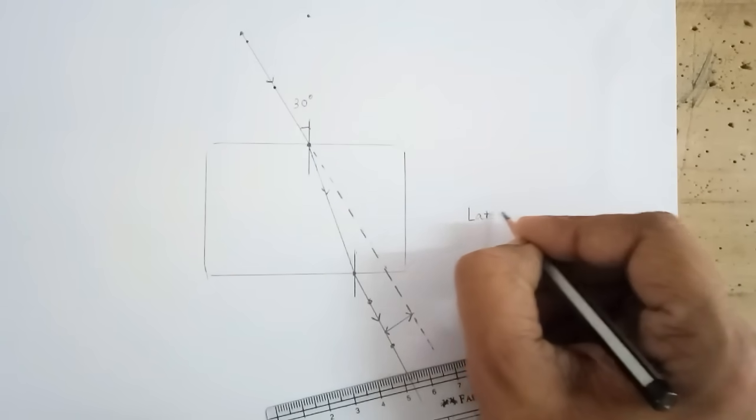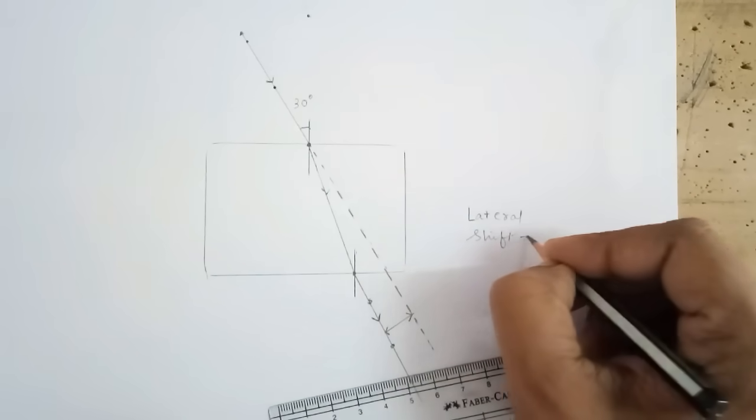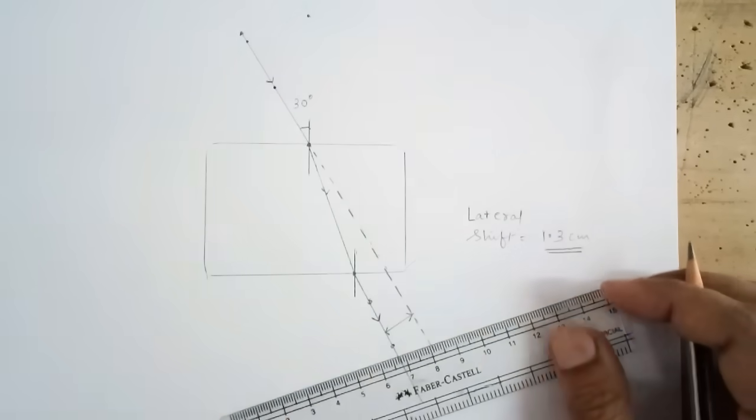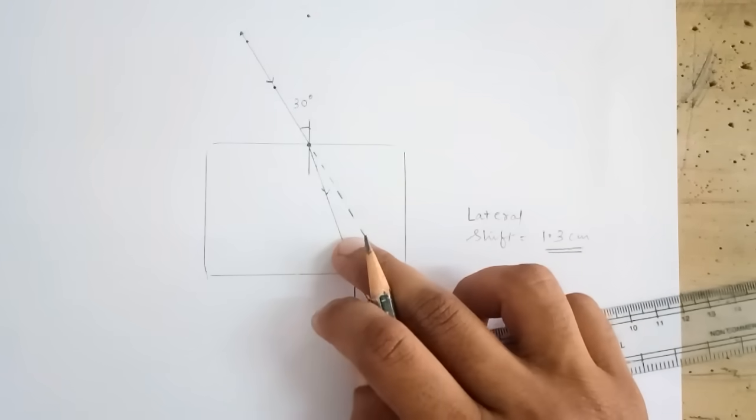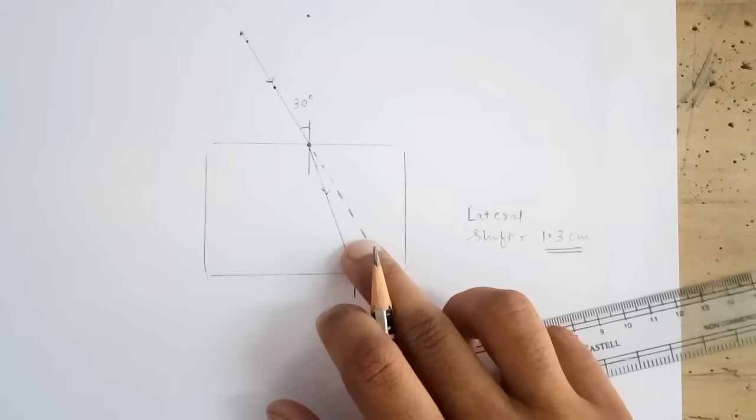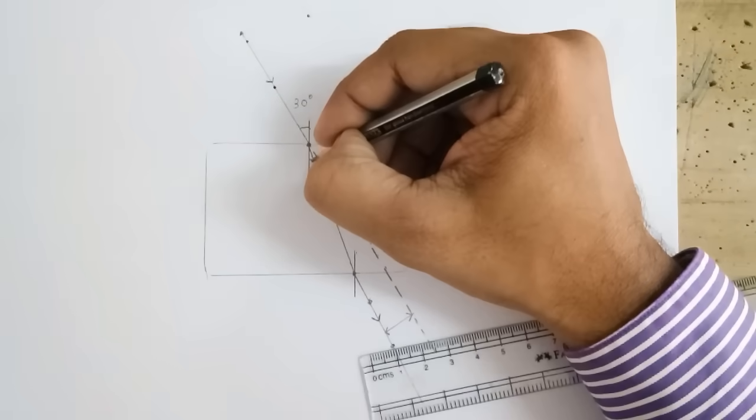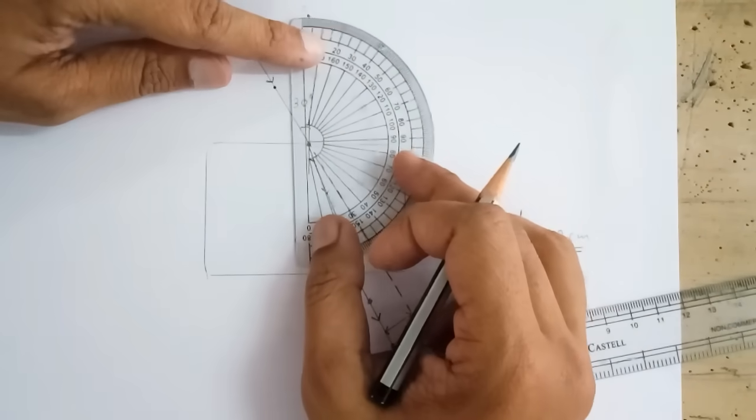So, the value of lateral shift was 1.3 centimeters and now I can also measure the angle of refraction as well. So, the angle of refraction would be this angle and very carefully we are supposed to measure this angle.